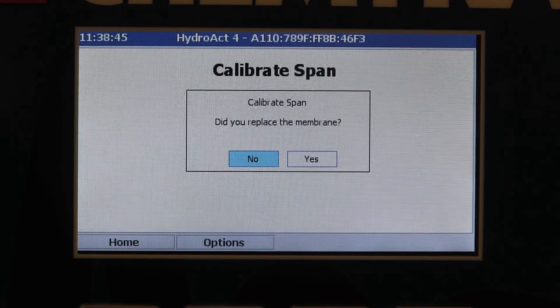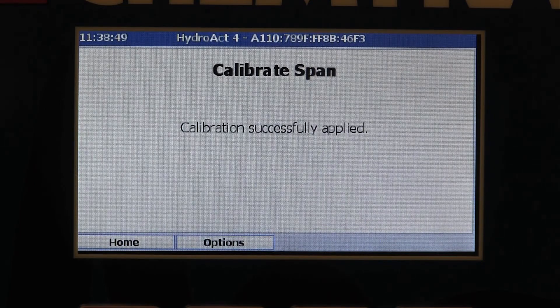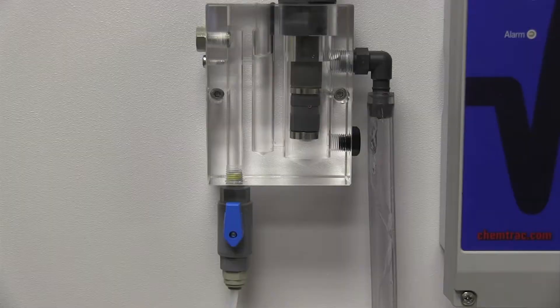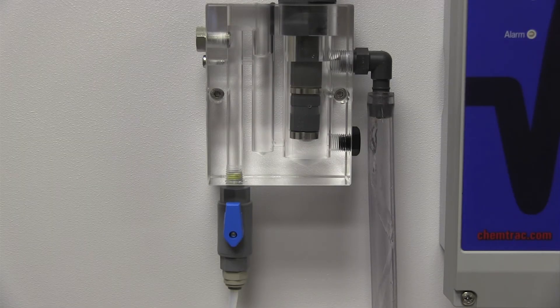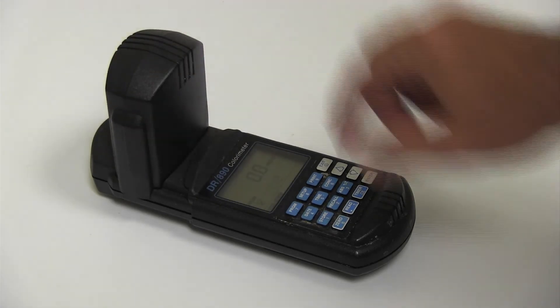Whenever a new membrane cap is installed, it is recommended to do an initial calibration after two hours, and a second calibration the following day. The probe can be expected to maintain accurate readings for up to a month, although it is recommended to check the calibration weekly.